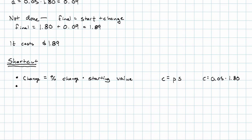And then we said that final is start plus change. In this problem, we said final is $1.80 plus 0.05 times $1.80. So notice what we did over here. We put in this expression for change. Final equals start plus the percent change times start.